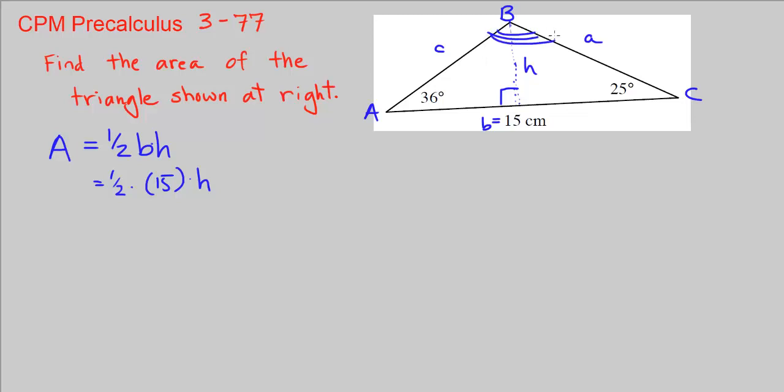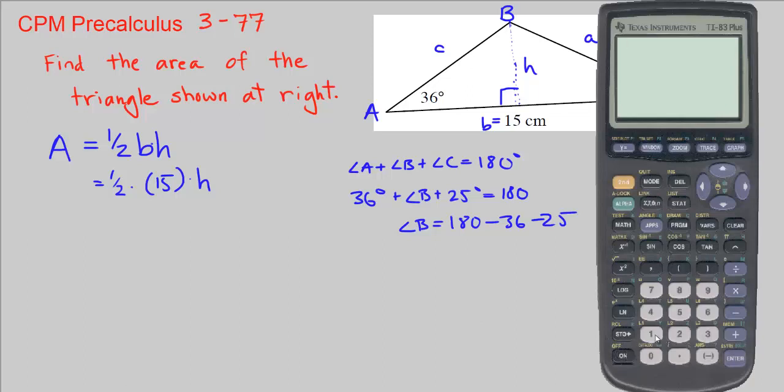Do we know angle B? Yes we do. We can figure that out because the sum of all three angles in a triangle always equals 180 degrees. So angle A plus angle B plus angle C is 180. That's 36 degrees plus angle B plus 25 equals 180. So angle B is equal to 180 minus 36 minus 25. We can do that in our calculator. 180 minus 36 minus 25 equals 119 degrees.